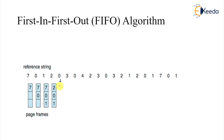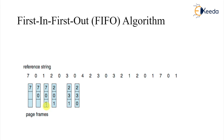When zero is referenced again, it is a hit. Two comes again — it is there, so it's a hit. Three comes: after seven, zero came next, so we replace zero — that is the fifth page fault. Then zero comes: one will be replaced — sixth page fault. Four comes: four is a page fault; two will be replaced — seventh page fault.